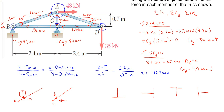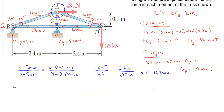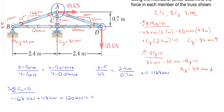At joint A we have members AB, AC, AD, and the 48 kilonewtons applied force. Summing forces in the X direction, taking rightward as positive: member AB has 168 kilonewtons with arrow down and to the left, so horizontal is minus 168 kilonewtons. The 84 from AC is vertical so don't count it. The applied 48 kilonewtons is horizontal going to the right, so plus 48 kilonewtons. The horizontal component of AD is 120 kilonewtons with arrow down and to the right, so plus 120 kilonewtons. That sums to zero — the horizontal is correct and in equilibrium.